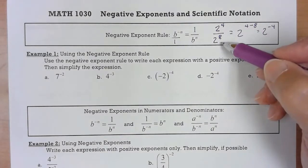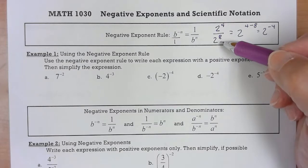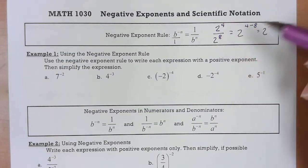But if I expanded this I would have 4 twos on top, 8 twos on the bottom. So those 4 would cancel with 4 of them down here and I would actually end up with 1 over 2 to the 4th. That is why those are equivalent.